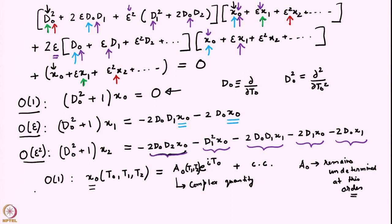Note that a0 is a function of the longer time scales t1 and t2. On a short time scale, a0 behaves as a constant — its variation is not visible unless you go to times as large as t1 or t2. At very early times, a0 is effectively constant, giving x0 ≈ constant × cos(t), consistent with the picture of a harmonic oscillator with no damping and unit frequency.